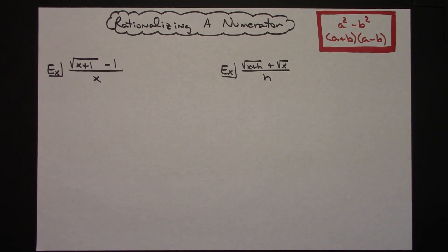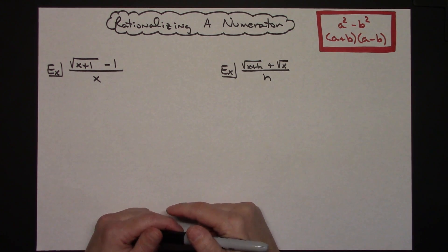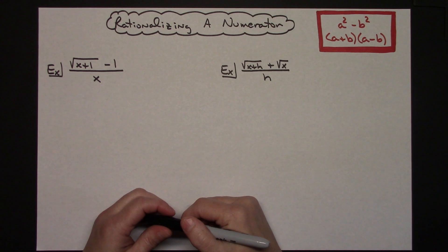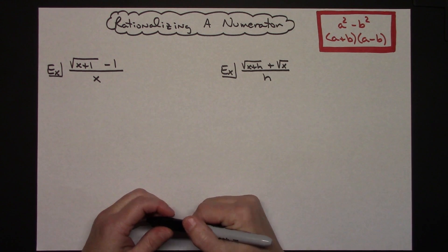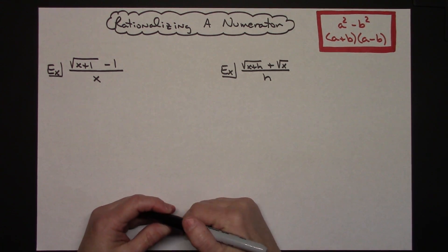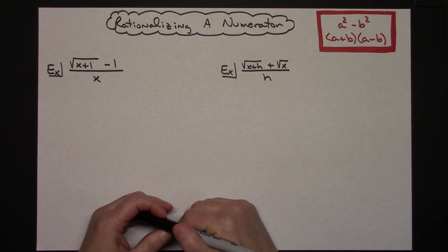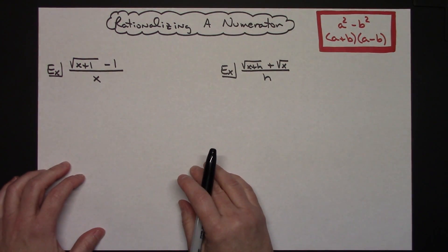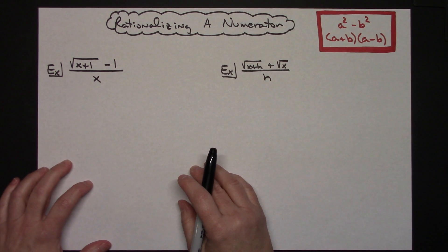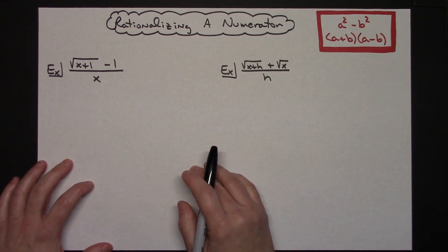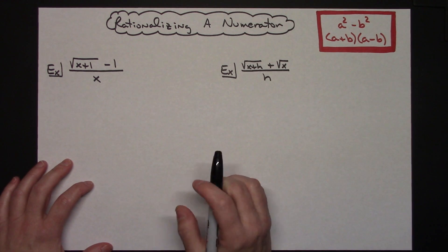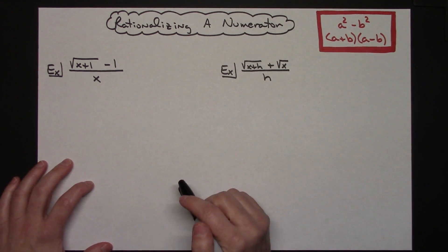Today we're going to be taking a look at rationalizing a numerator. This is going to become a very important algebra skill for when you move into calculus, because when you solve limits, rationalizing a numerator is going to be a very helpful skill. But here we are just going to be focusing on the actual algebra skill of rationalizing a numerator. You should be familiar with the concept because you rationalize the denominator a lot in Algebra 1 and Algebra 2.